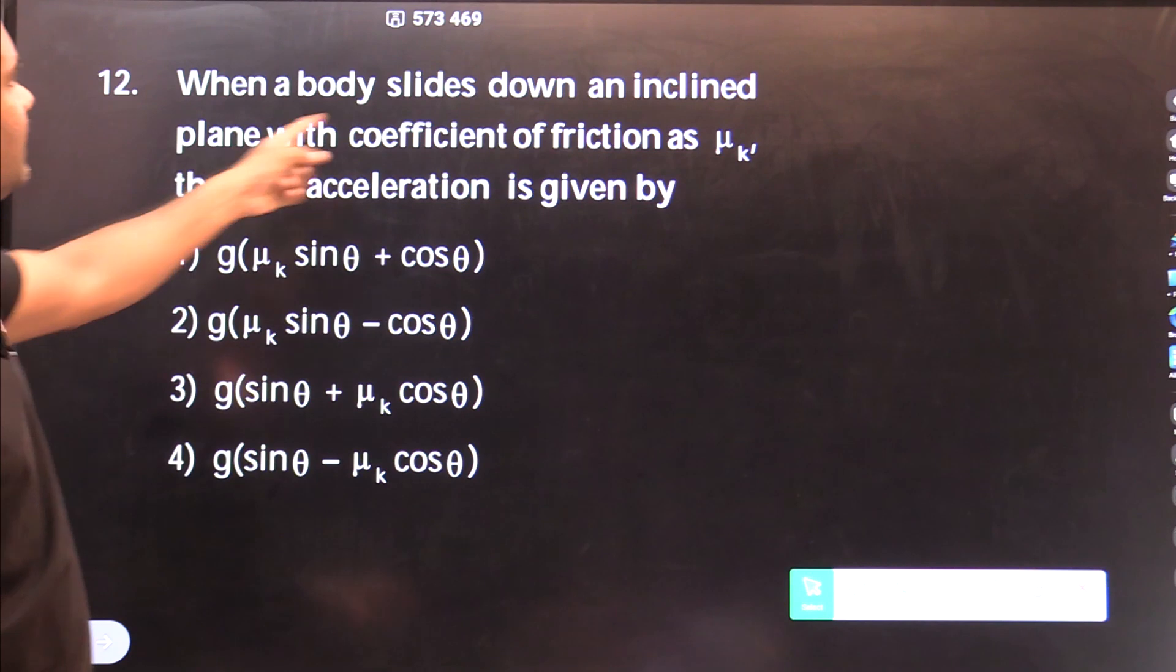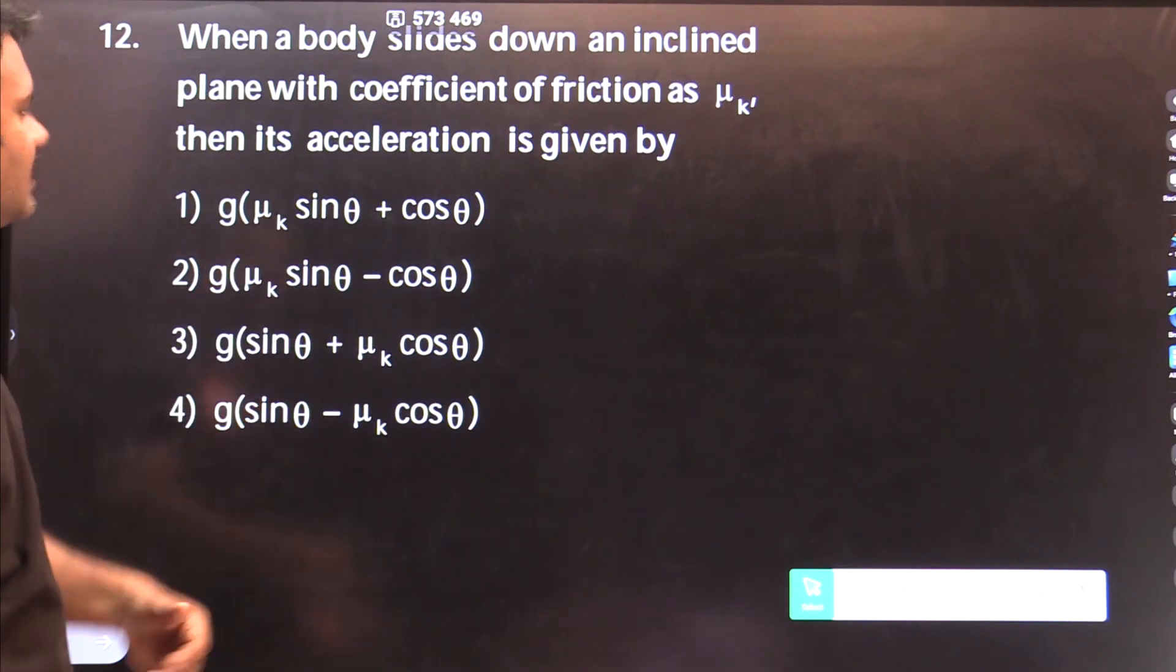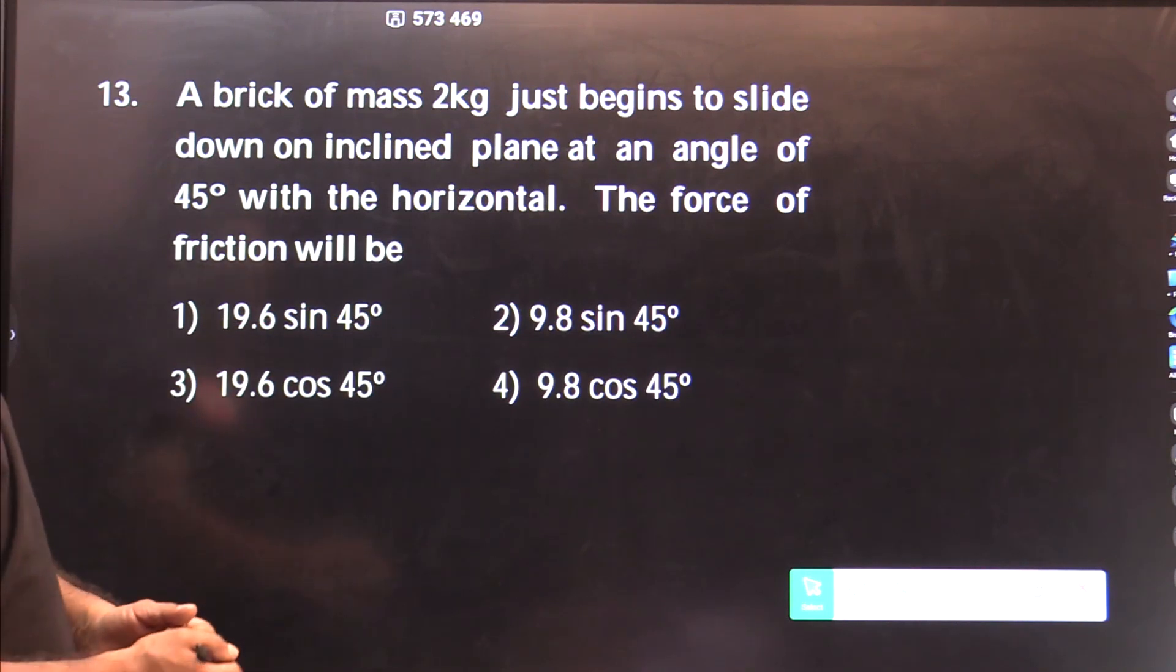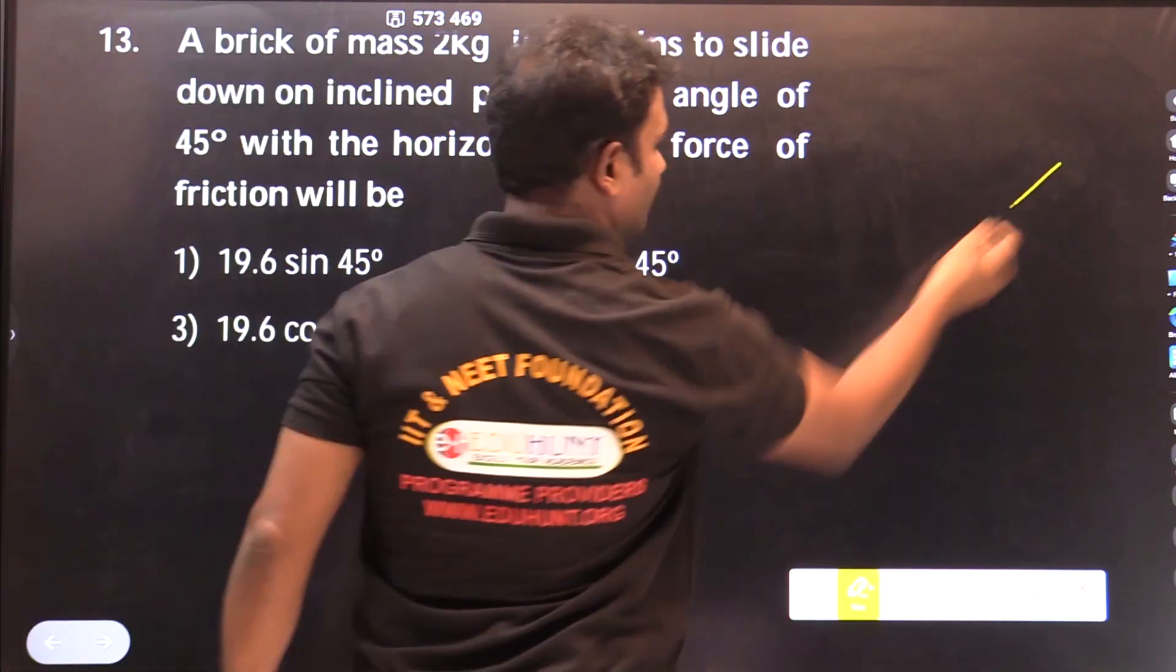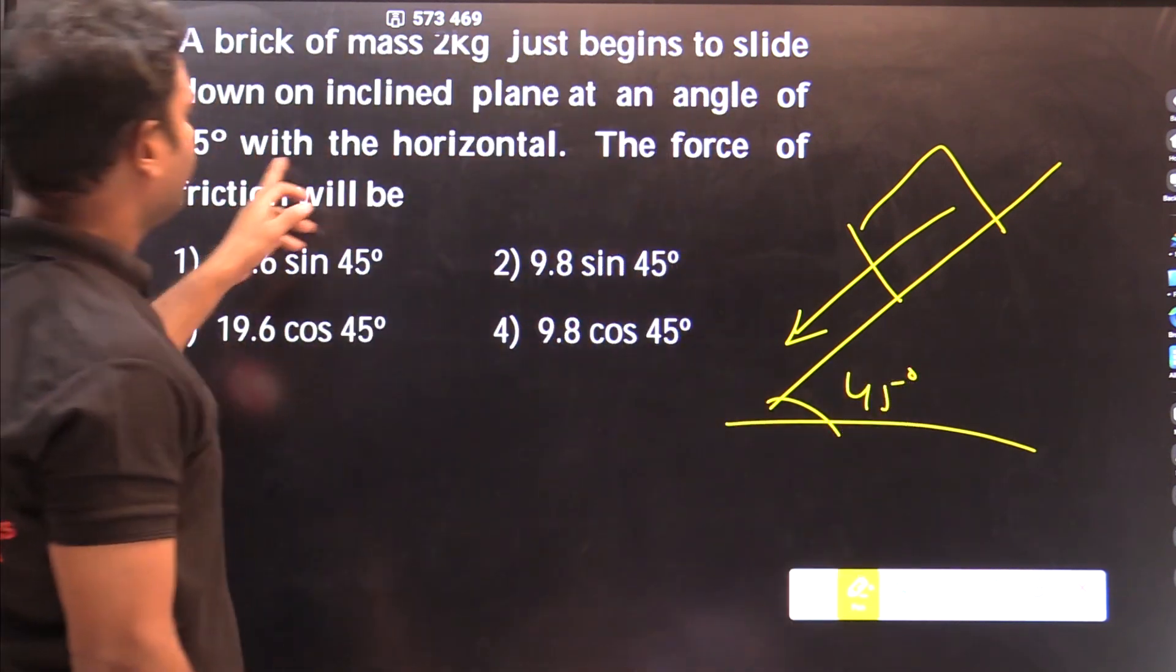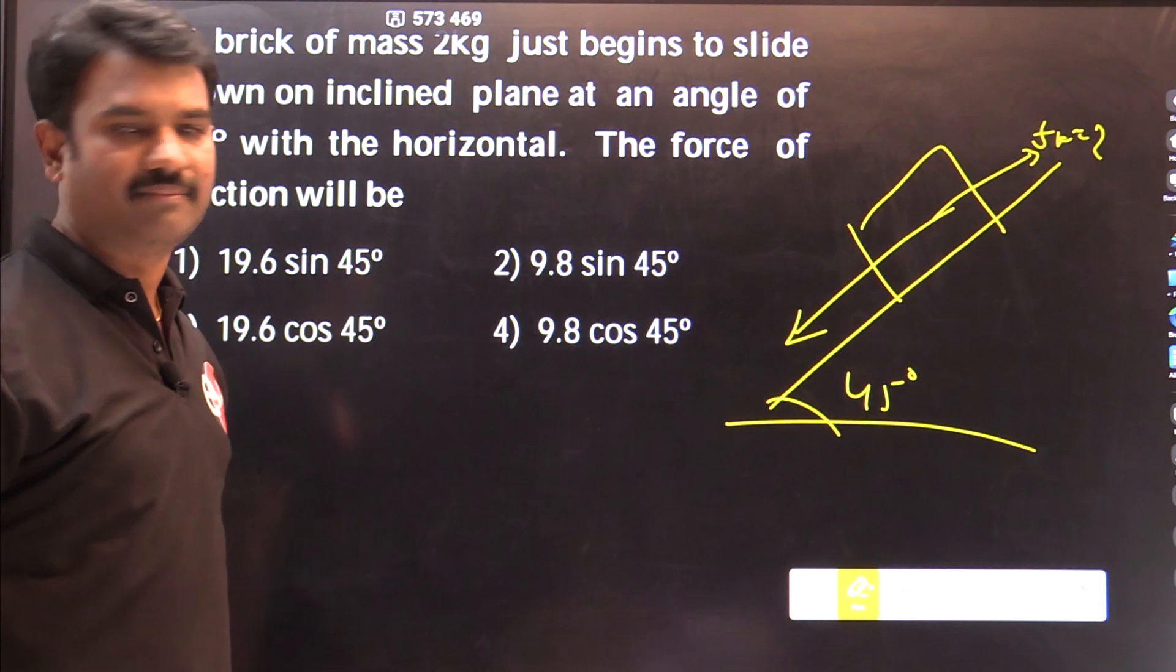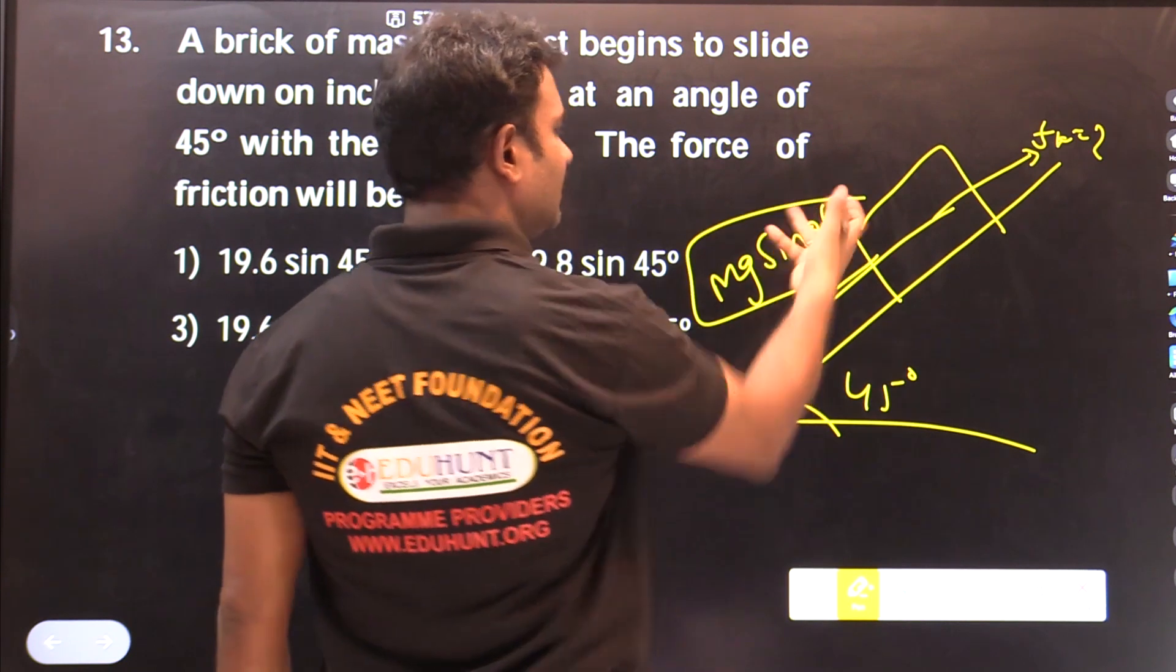When a body slides downwards on an inclined plane with coefficient of kinetic friction mu k, the acceleration is given by this formula. A brick of mass 2 kg just begins to slide down an inclined plane at angle 45 degrees with the horizontal. The force of friction will be, just ready to slide.